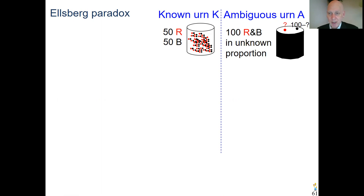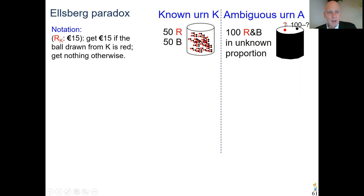Maybe 10 are red and 90 are black, maybe 75 are red and 25 are black — it can be anything. From each urn, a ball will be drawn at random. The color will be inspected and you can win money depending on the color of the ball drawn. Here I denote a gamble on red from the known urn: if the ball drawn from the known urn has the color red, you get 15 euro; otherwise you get nothing. You're gambling on red from the known urn.